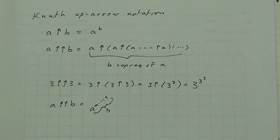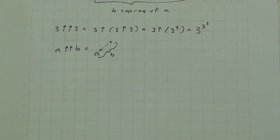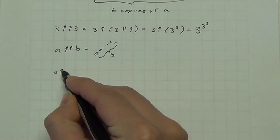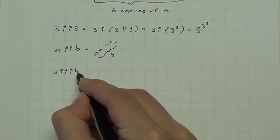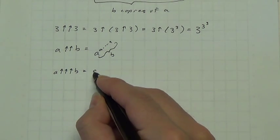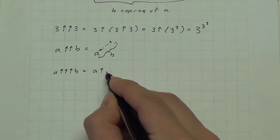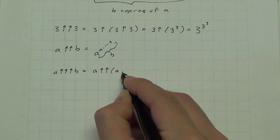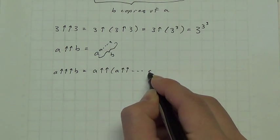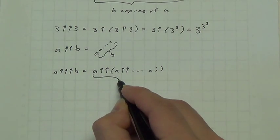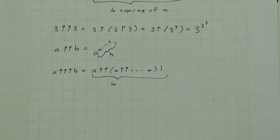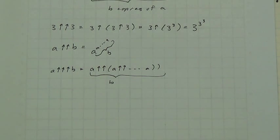A triple up-arrow B is A double up-arrow A, and so on, for B copies of A. So it gets very big very quickly.